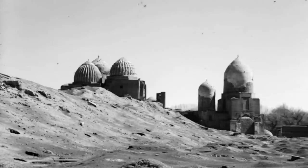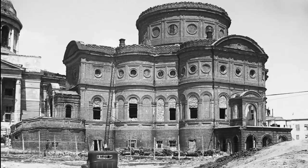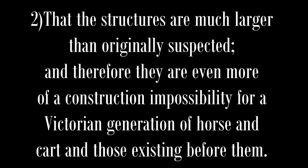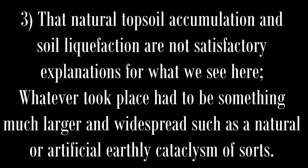The strange case of buried architecture provides the following conclusions: what lies beneath are not the remains of previous civilizations; more often than not, the buried structures are consistent with the architecture we see above ground; the structures are much larger than originally suspected, and therefore even more of a construction impossibility for a Victorian generation with horse and cart. Natural topsoil accumulation and soil liquefaction are not satisfactory explanations for what we see here. Whatever took place had to be something much larger and widespread — such as a natural or artificial earthly cataclysm of sorts.